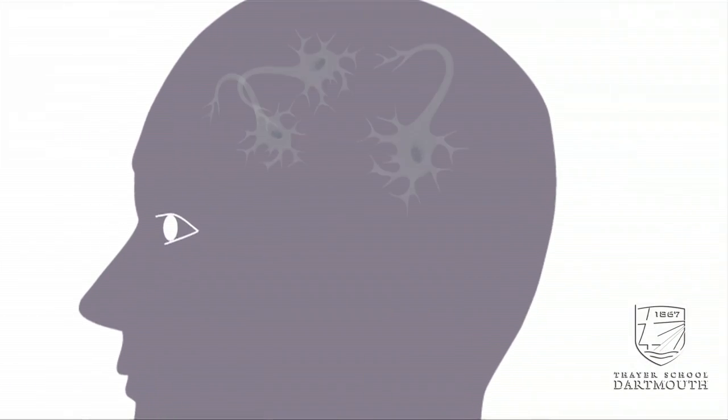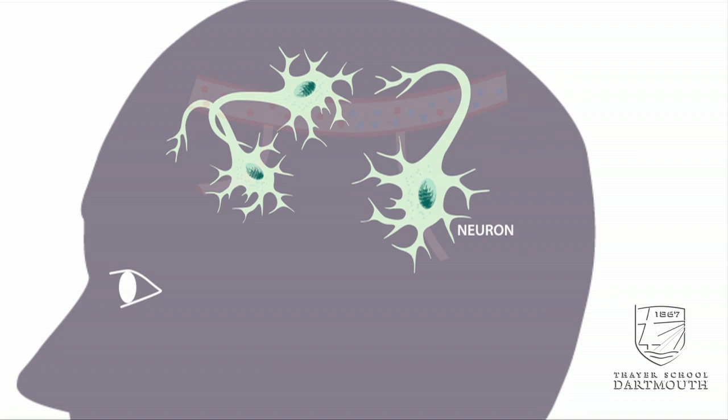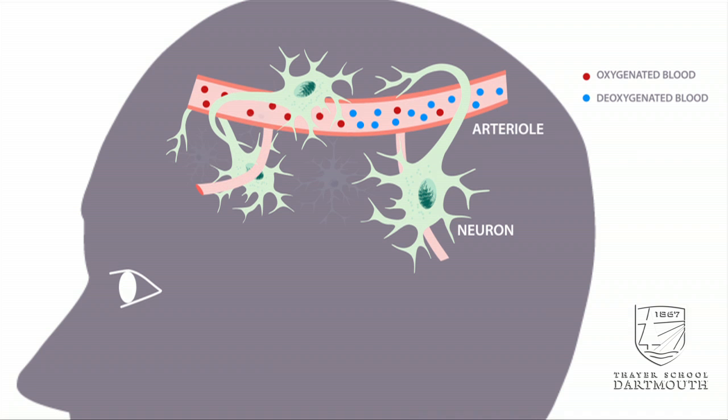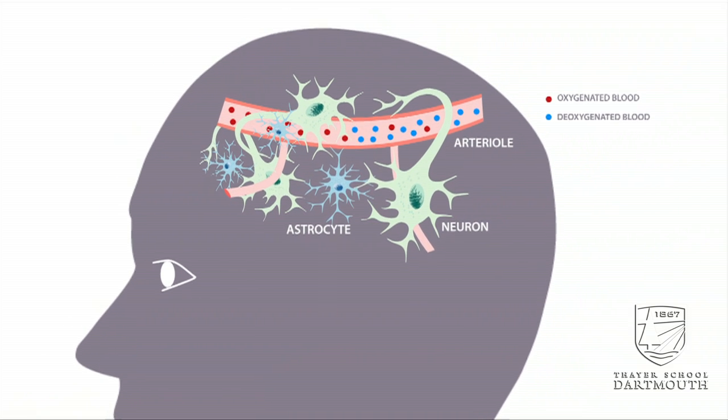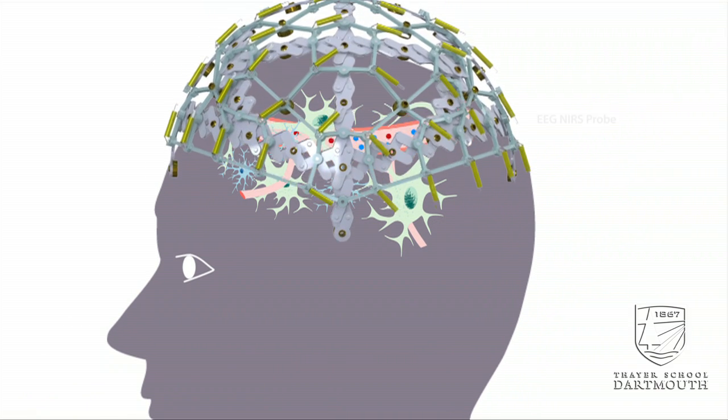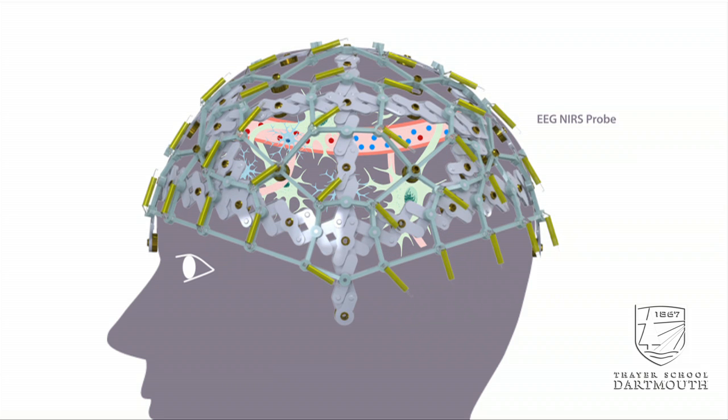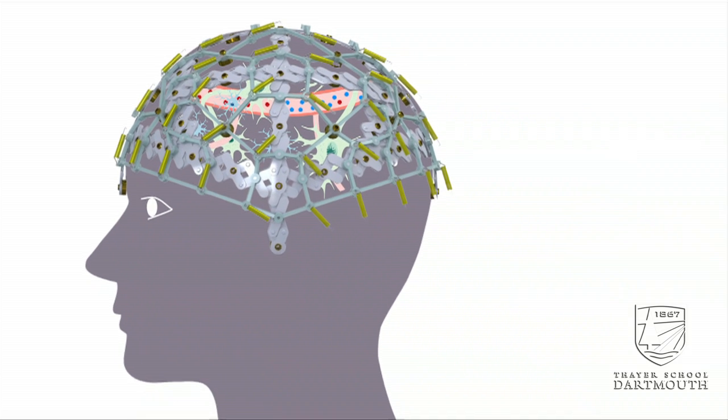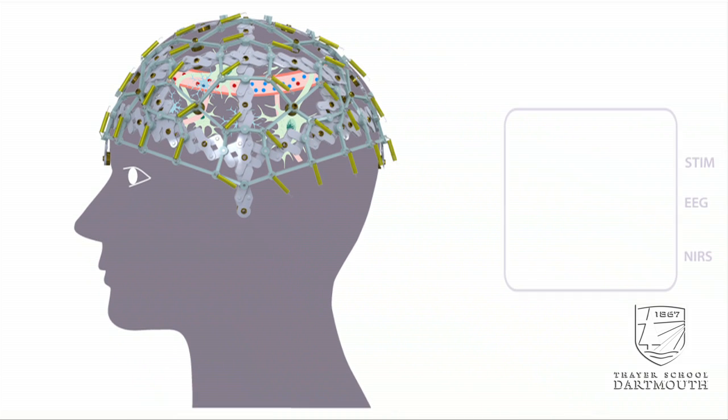Neurovascular units in the microenvironment of the brain are comprised of neurons, arterioles that carry blood oxygen to the brain, and glial cells such as astrocytes that help with cellular communication. Our EEG NIRS probe can be quickly and easily positioned on the head for measurement of neurodynamics with EEG and hemodynamics with near-infrared spectroscopy or NIRS.